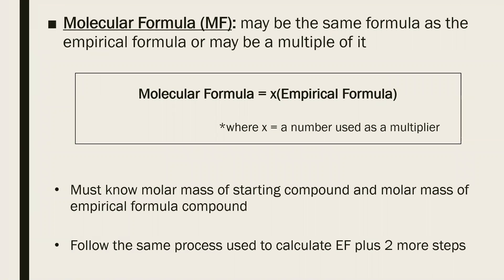So molecular formula may be the same as the empirical formula or it may be a multiple of it. For example, you may have an empirical formula of CH2, and if you put a multiplier of 2 in front of it, you now get C2H4. So X is going to be a multiplier, the empirical formula is going to be a compound with subscripts, and if it's anything greater than 1, your molecular formula will be different than your empirical formula.